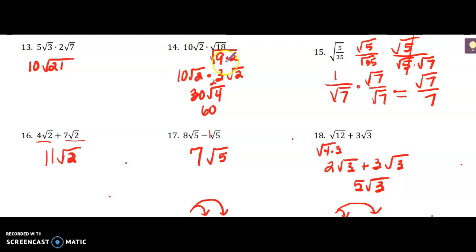For number 14, I simplified the right-hand side first. The square root of 18 simplifies to 9 times 2; the square root of 9 is 3, so now it's 10 square roots of 2 times 3 square roots of 2. So 10 times 3 gave me 30, and the square root of 2 times the square root of 2 is the square root of 4, which is 2, and then 2 times 30 is 60.